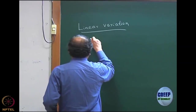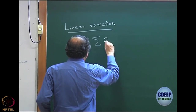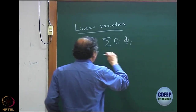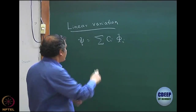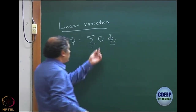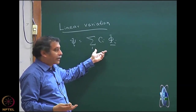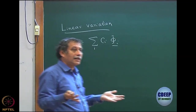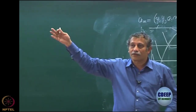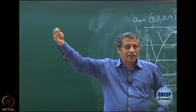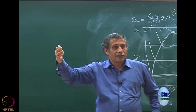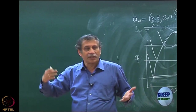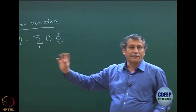If you vary the wave function which is expanded linearly in a basis — where the basis functions are known and the coefficients are the only unknowns — that is what we mean by linear expansion. If you change the basis function, it is no longer linear dependence, because your basis usually contains exponential terms like exp(-something * R). So you have to change the exponent, just like in the hydrogen atom. Those are not linear parameters, so it will no longer be called linear variation.